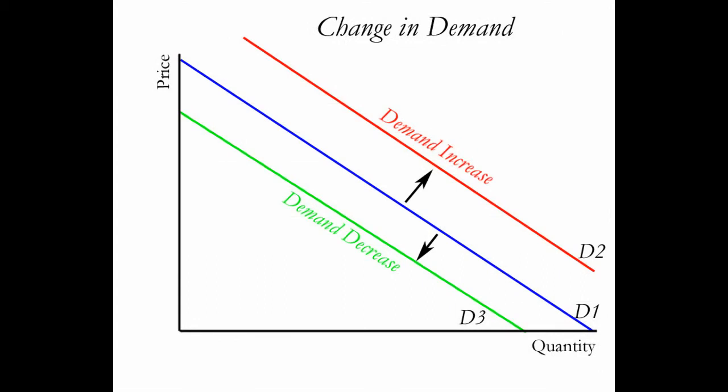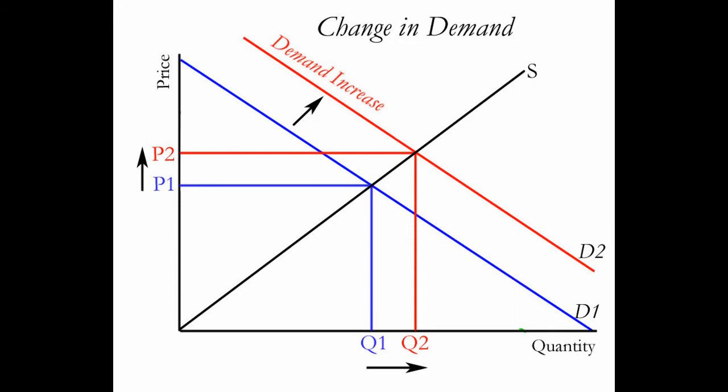An increase in demand is a rightward shift from our starting curve D1, or the blue curve, to D2, which is the red curve. We can see here that as demand increases, the consequence will be an increase in the price a customer is willing to pay and an increase in the quantity demanded by the customer. When demand shifts, price and quantity shift the same direction.